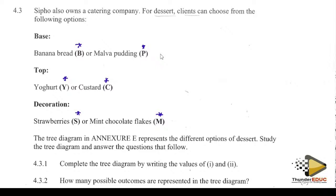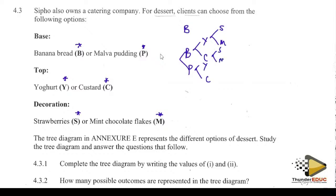You expect the tree to have branches. The base is either bread or pudding. That splits again — either yogurt or custard for the topping. Then it splits again — either strawberries or chocolate flakes for decoration.